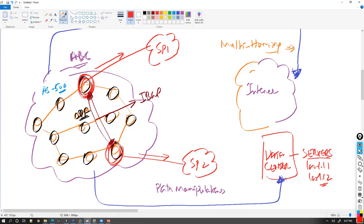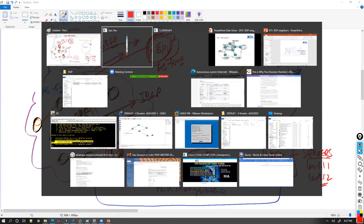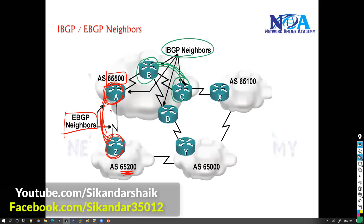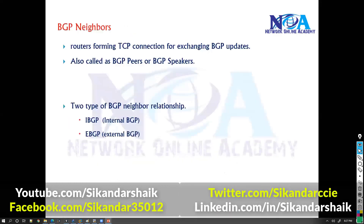Similarly, when your border router and a service provider router — say the service provider uses AS 1000 — form neighbors, we call them external BGP neighbors. For example, if this router is in AS 65200 and the other is in AS 500, the neighborship between them is called external BGP. In contrast, routers within the same autonomous system form internal BGP neighbors. That is the key difference between internal and external BGP.